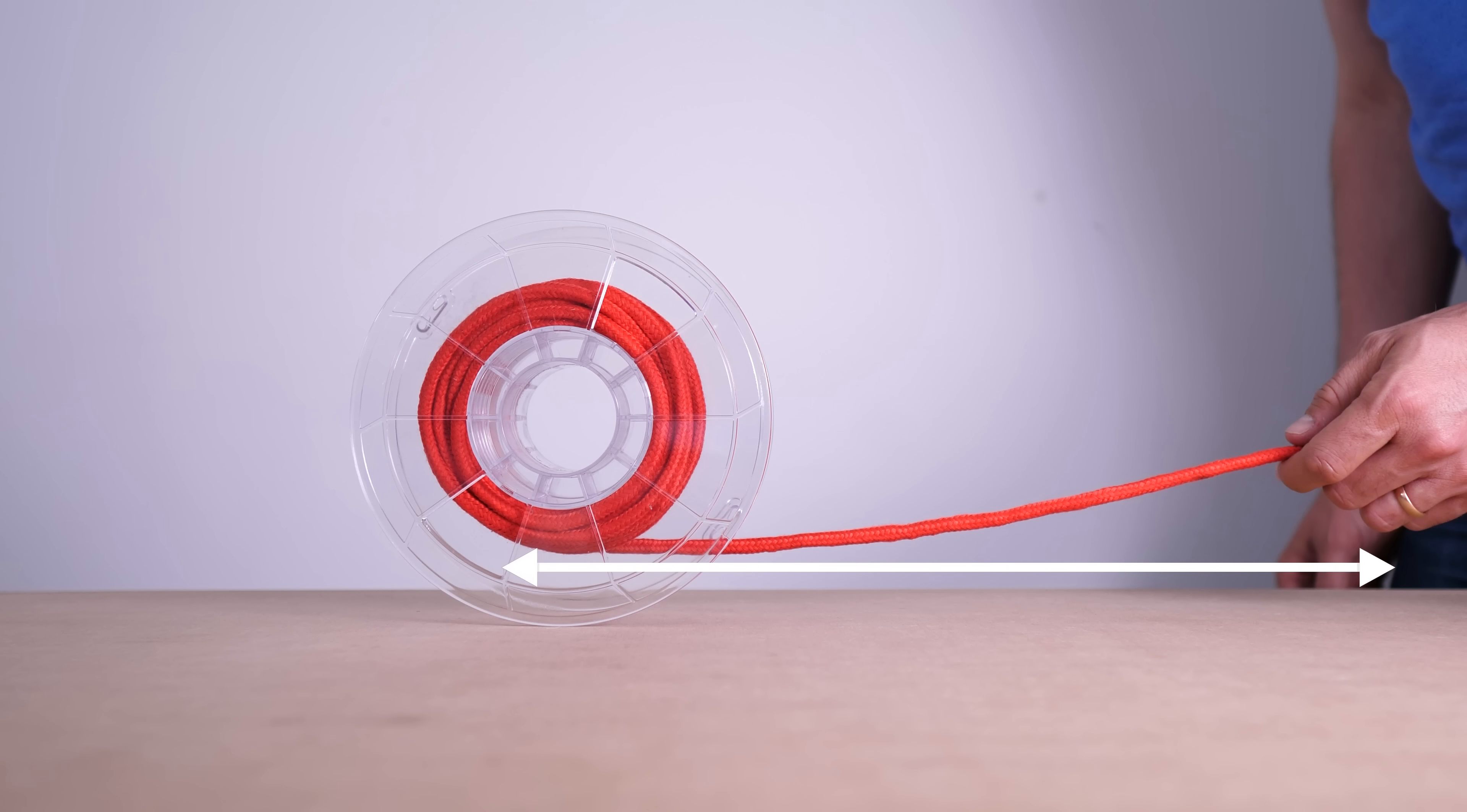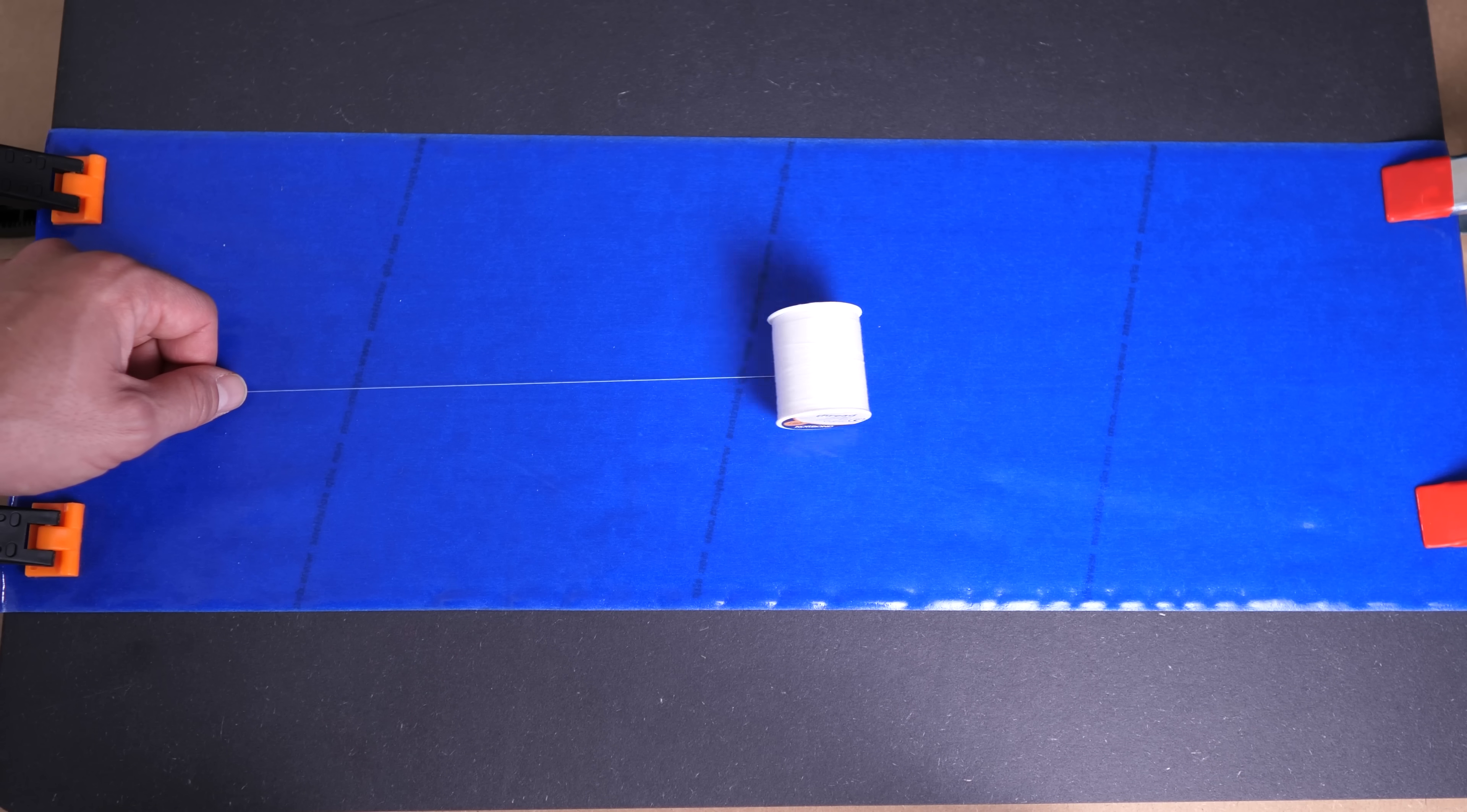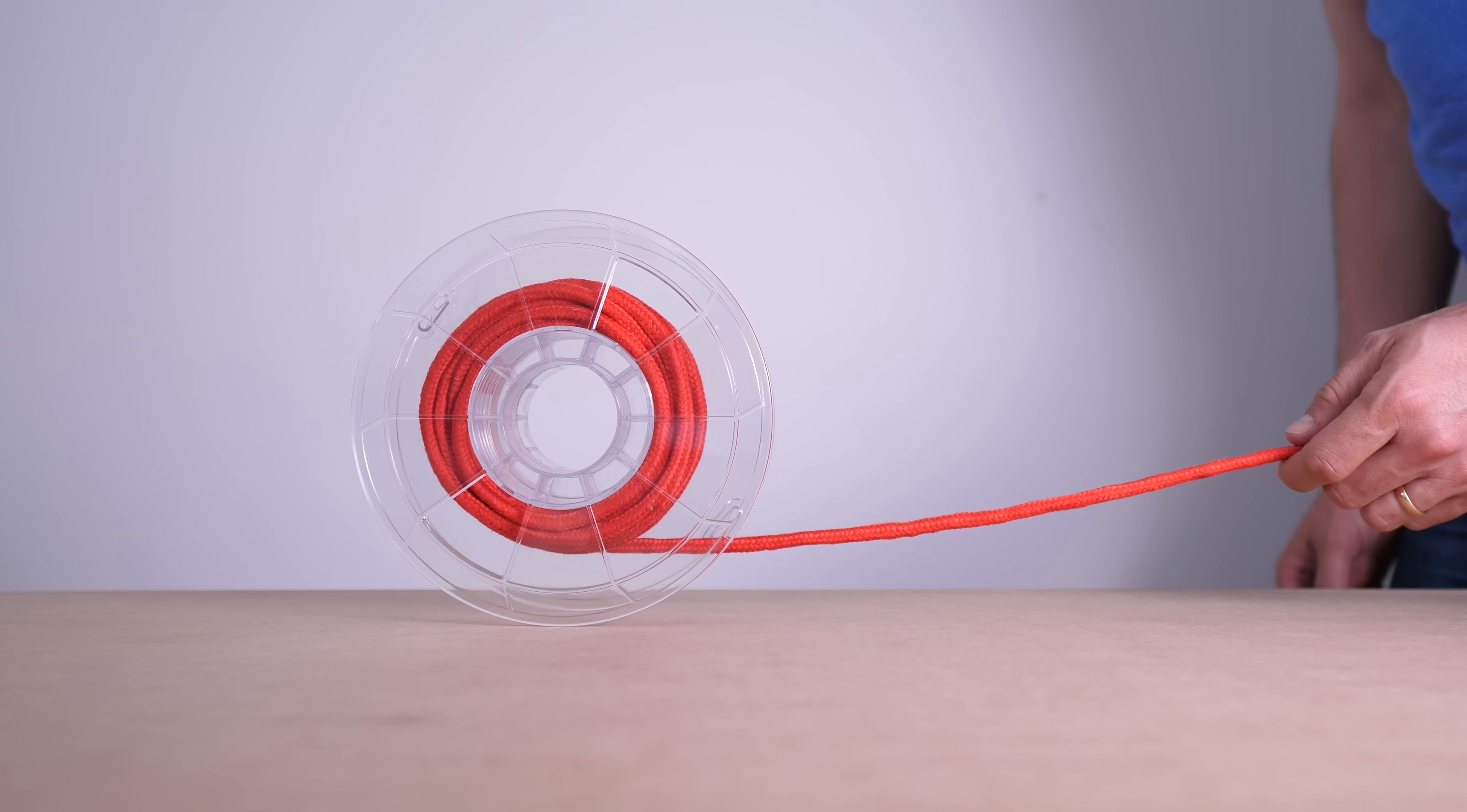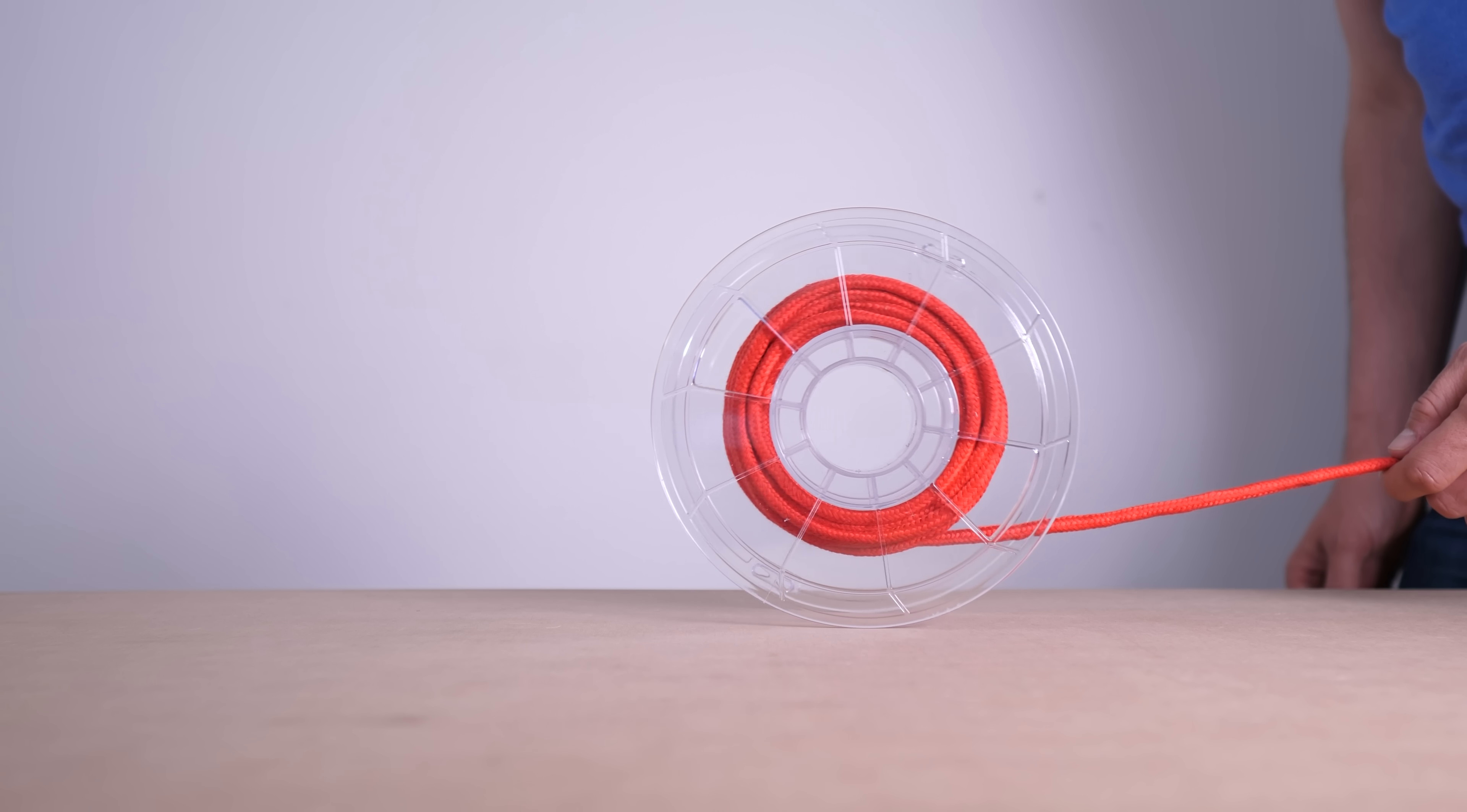Actually, I think the question with the more counterintuitive answer is, will the cord get longer or shorter? Because if you tug on a cord that's wrapped around a spool, you expect the cord to unspool a bit so that you have more cord. But based on the shot that I showed you at the very beginning, you may already have figured out that the spool will roll towards you and the cord will get shorter.